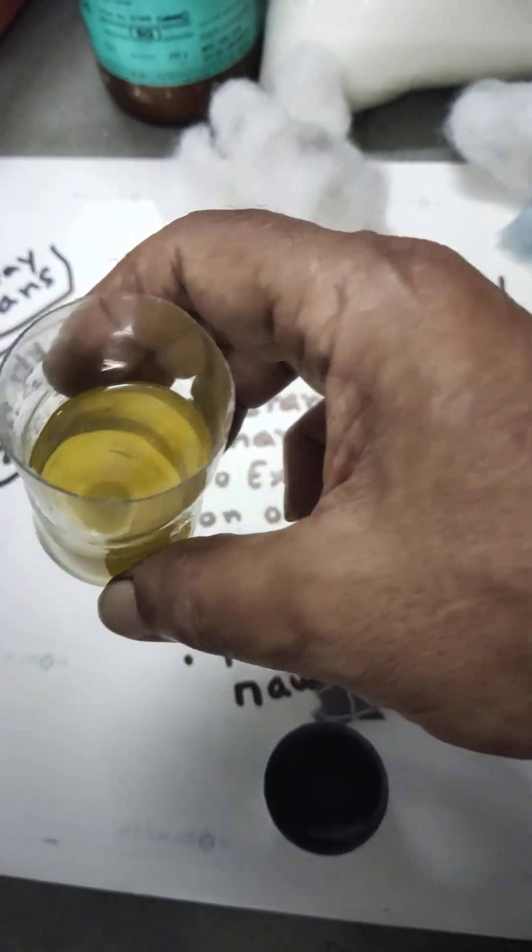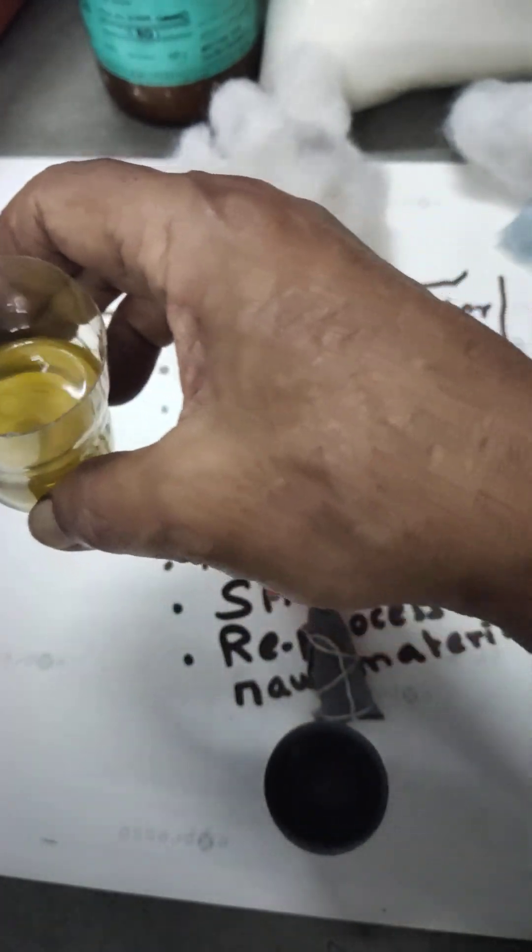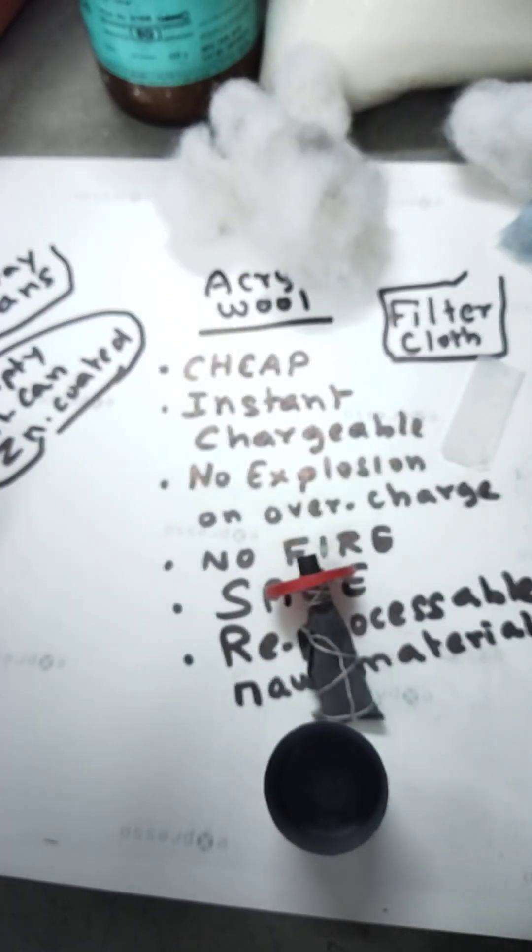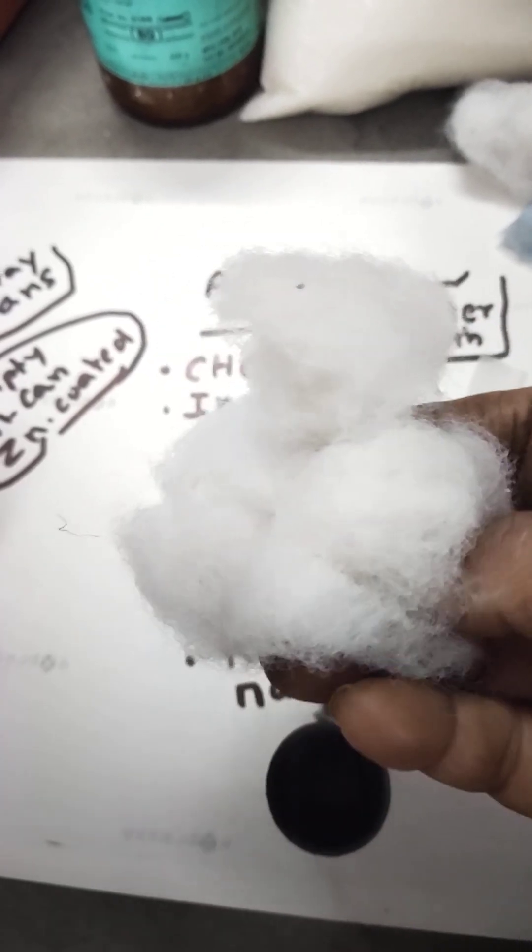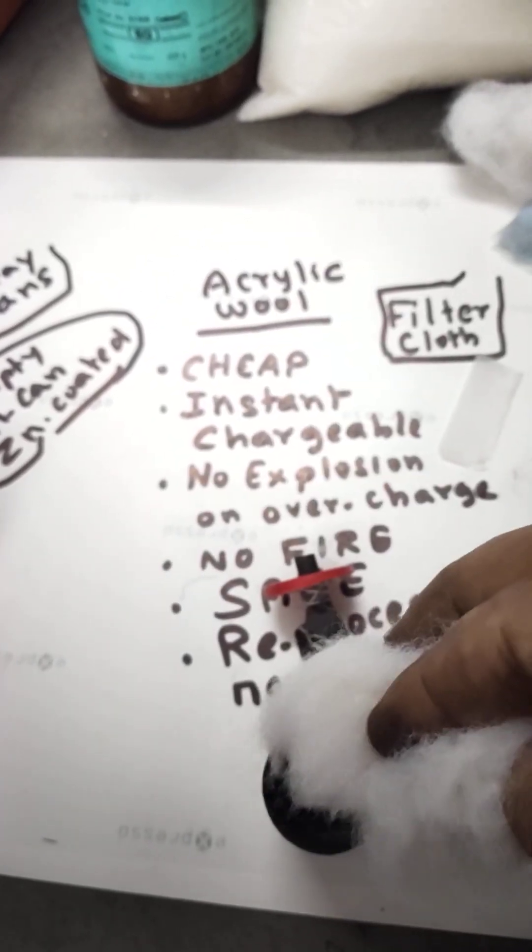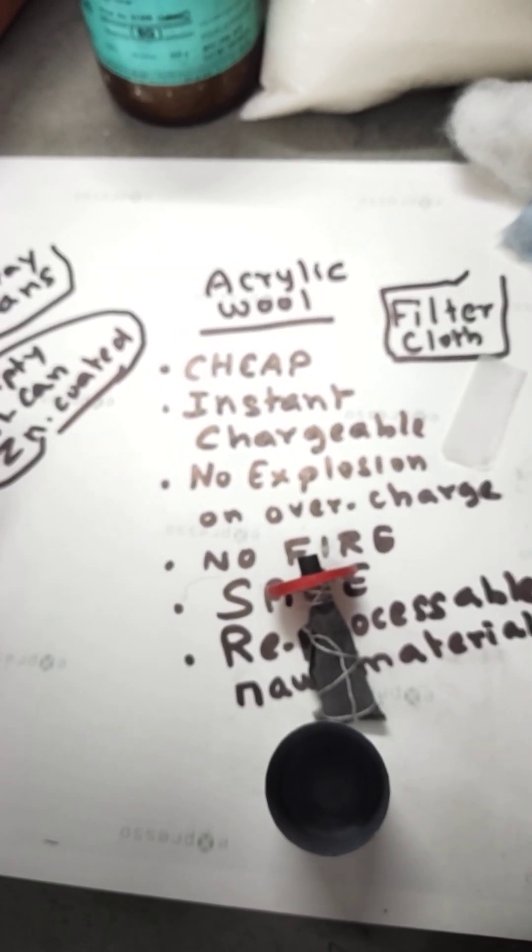You can modify it by adding some extra ions for better performance. All we require is acrylic wool, which I'm going to put inside the battery as a filter cloth, a barrier between the positive and negative.